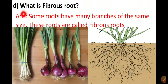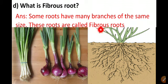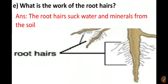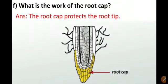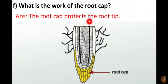D: what is fibrous root? Some roots have many branches of the same size; these roots are called fibrous roots and they are very thin and weak. E: what is the work of the root hairs? The root hairs suck water and minerals from the soil. Last question: what is the work of the root cap? The root cap protects the root tip.